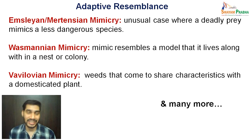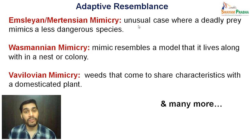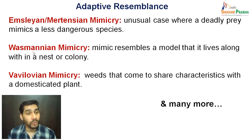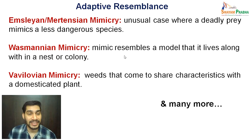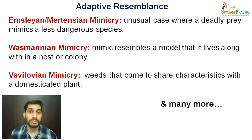Moving ahead, beyond the types just discussed, there can be adaptive resemblance or mimicry beyond these as well. For example, Vavilovian mimicry is where weeds come to share characteristics with domesticated plants. There is also another type where the mimic resembles a model it lives alongside within its nest or colony, mostly shown in social insects. There are many other types of mimicry that come under adaptive resemblance and act as a force of evolution.